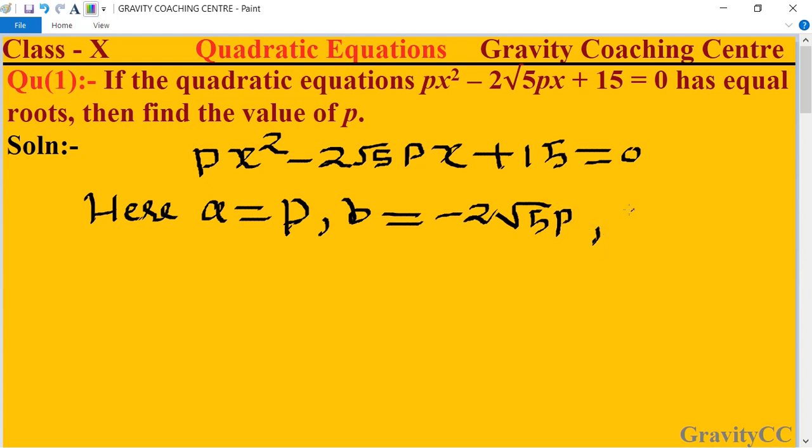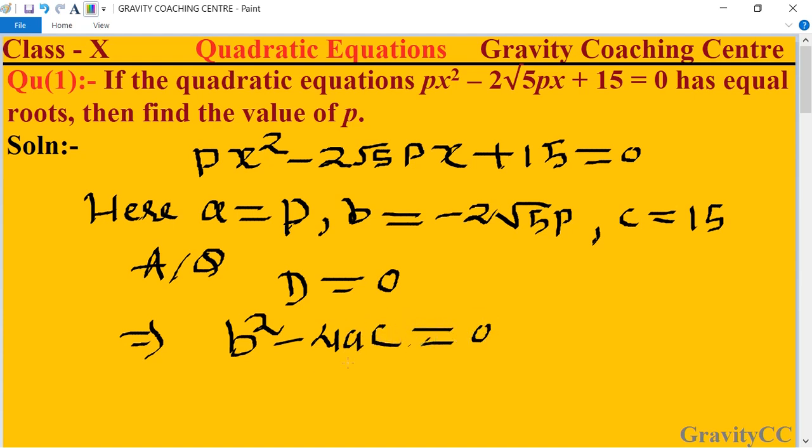According to the question, it has equal roots, so D = 0. We know that the formula for discriminant is D = b² - 4ac.